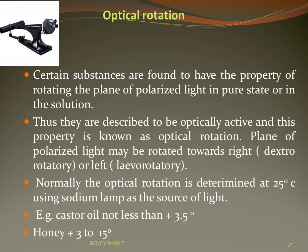Optical rotation: certain substances have the property of rotating the plane of polarized light in pure state or in solution, and are described as optically active. This property is known as optical rotation, and it may be dextrorotatory or levorotatory. It is normally determined at 25°C using a sodium lamp as the source. For example, castor oil is not less than +3.5°, and honey is +3° to −1.5°.